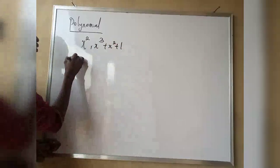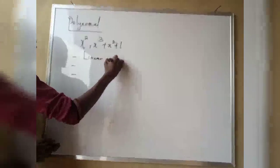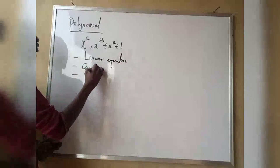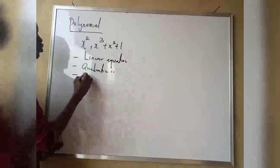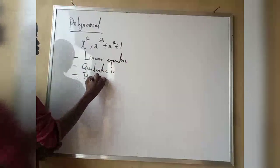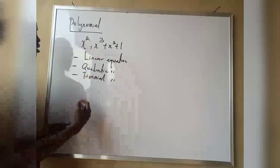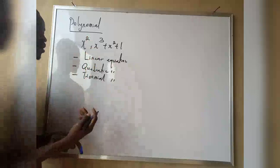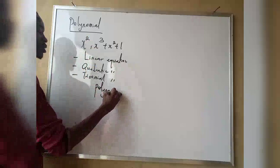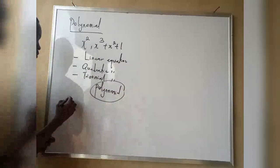When we are talking of polynomial, it can be divided into many forms. We have what we term as a linear equation, we have what we term as a quadratic equation, and also we have what we term as a trinomial equation. Basically, every other equation that is a power of three, a power of five, or a power of six we categorize as polynomial.